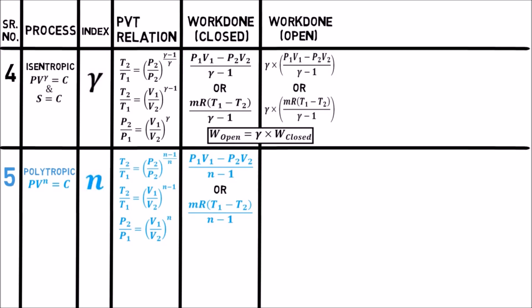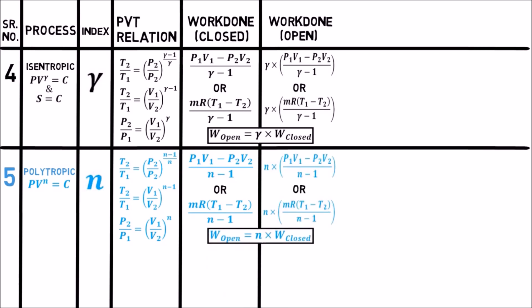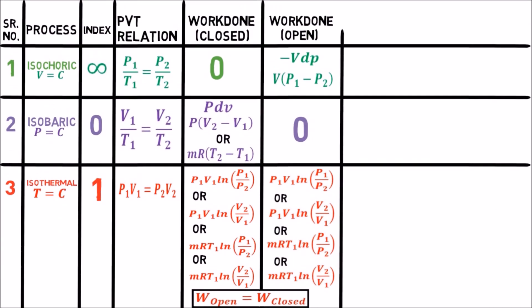Similarly, to get open system work done for polytropic process, simply multiply the closed system work done by index n, because work done of open system is n times work done of closed system in case of polytropic process. These work done formulas are for open systems only, showing area under the PV diagram about the pressure axis, i.e. y-axis, derived from integration of minus V dP.